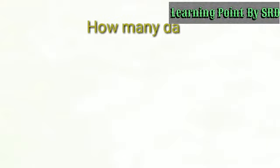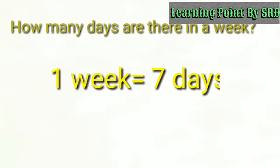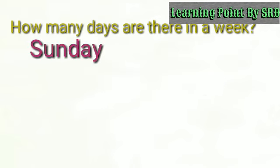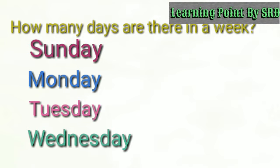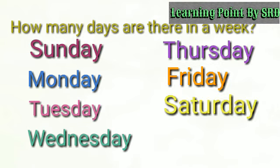Now, days. How many days are there in a week? There are 7 days in a week. They are Sunday, Monday, Tuesday, Wednesday, Thursday, Friday and Saturday. Now we will learn the spelling of the days.